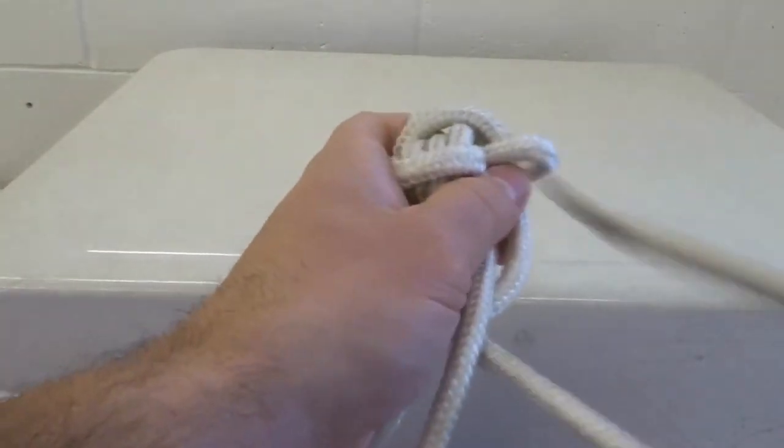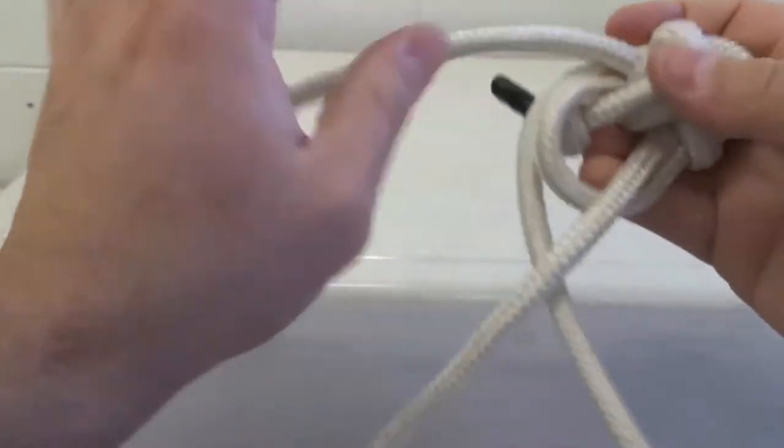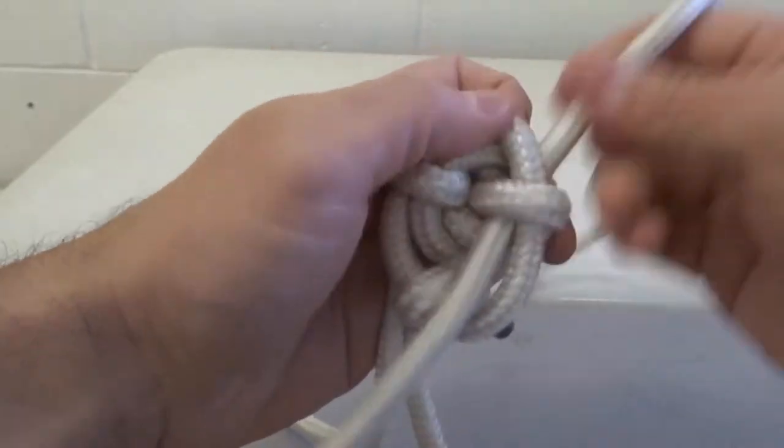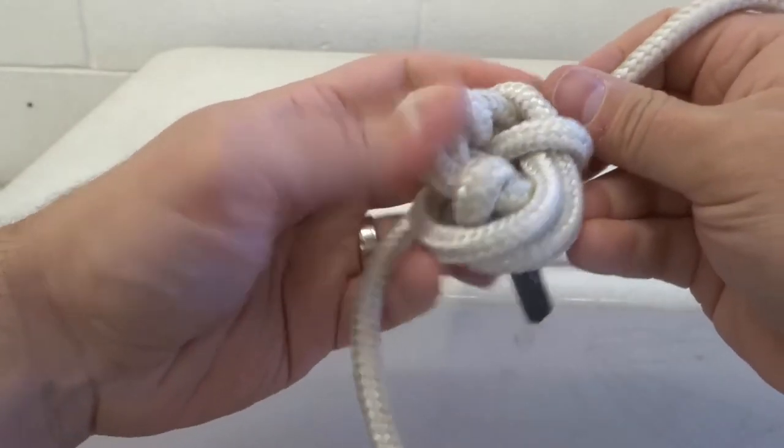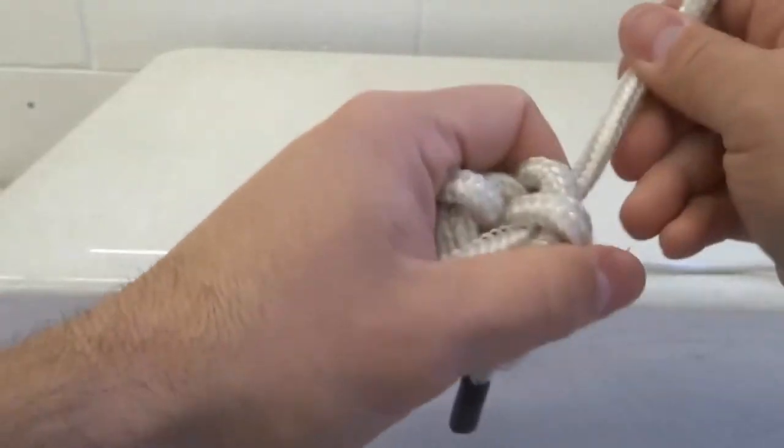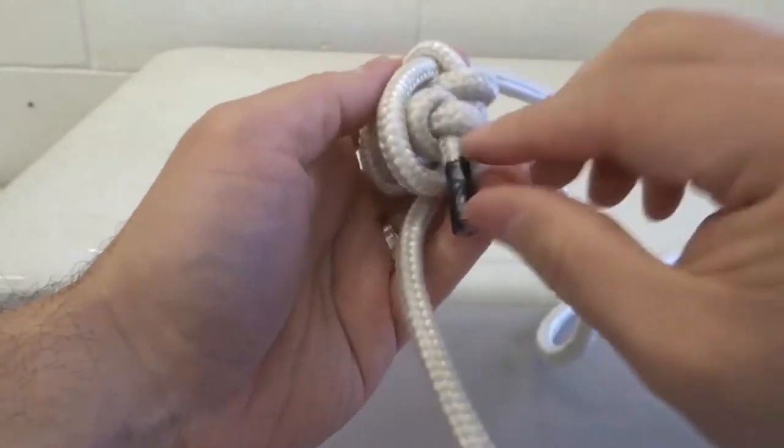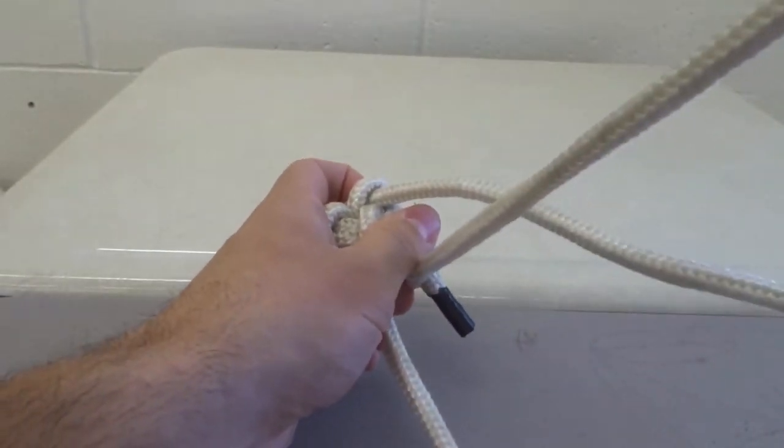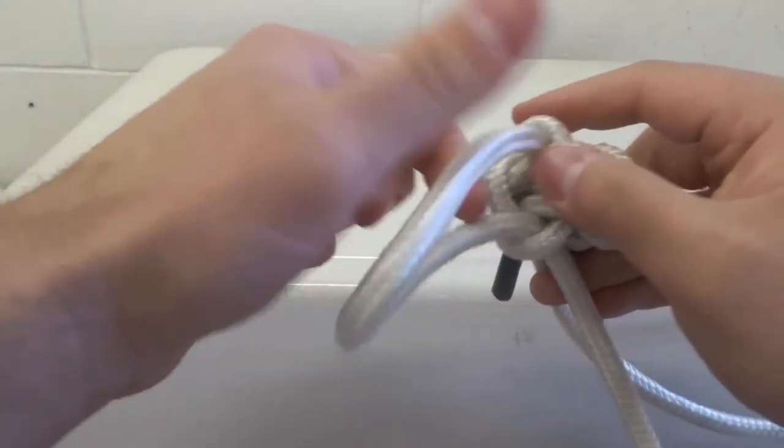Once again this rope just keeps getting in the way, but it's okay just keep moving it not a big deal. Tighten it up over here like that, pull that stopper knot through just like that and then we're almost done at this point. Pull it through like that, pull it through like that nice and tightly.